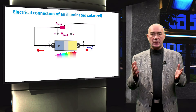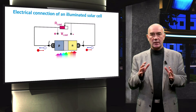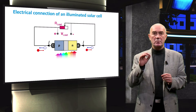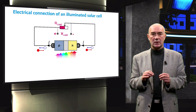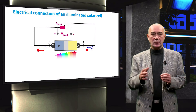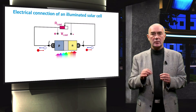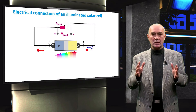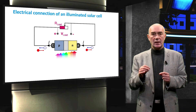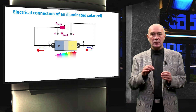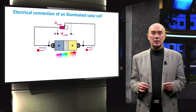When a PN junction functions as a solar cell, it can deliver power to the external circuit. The current leaves the solar cell from the P-type semiconductor and flows through the external circuit into the N-type semiconductor. In this case the electrode attached to the P-type material is the cathode — opposite to a dark PN junction under forward bias, where the current leaves from the N-type semiconductor, making that electrode the cathode.